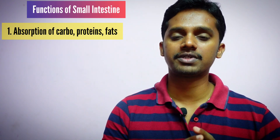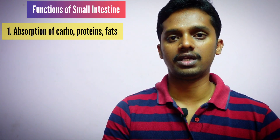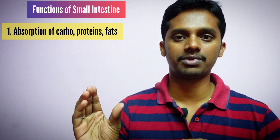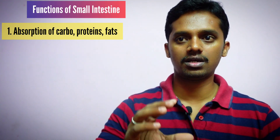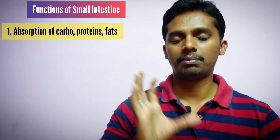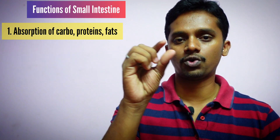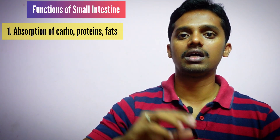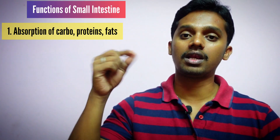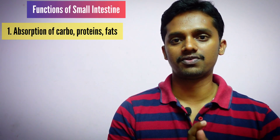The stomach's primary function is digestion, and the small intestine's primary function is absorption. Digestion means breaking a large molecule into smaller pieces. Absorption means taking those small pieces into the cells of the body.